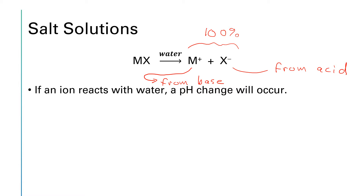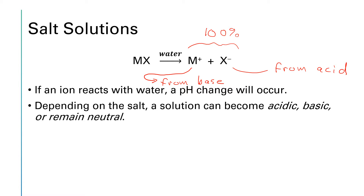If either one of these ions reacts with water itself — a molecule of water — a pH change will occur. Depending on the nature of the cation and the anion when they react with water, the solution can become either acidic, basic, or remain neutral. So we can have an acidic salt, a basic salt, or a neutral salt.